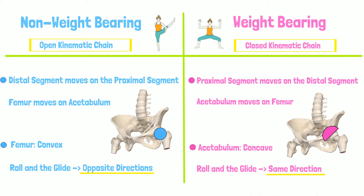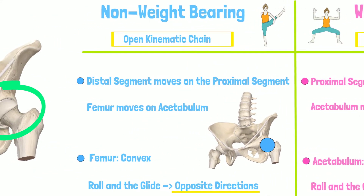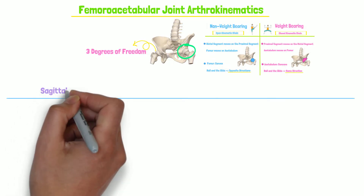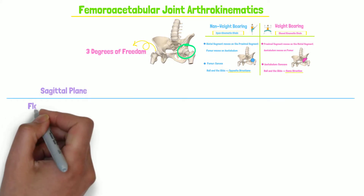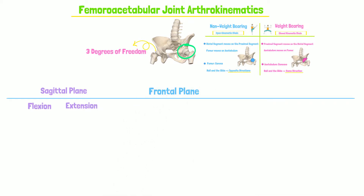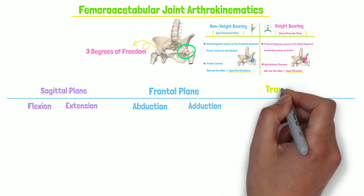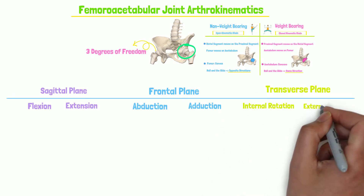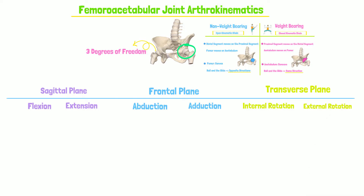In this video, we will examine the arthrokinematics for a non-weight-bearing femoroacetabular joint movement. It moves in the sagittal plane for flexion and extension, in the frontal plane for abduction and adduction, and in the transverse plane for internal and external rotation. Let's look at the sagittal plane first.